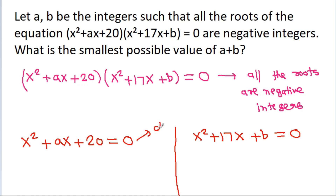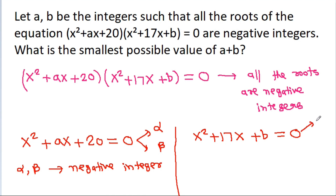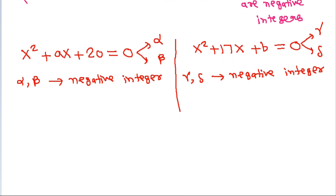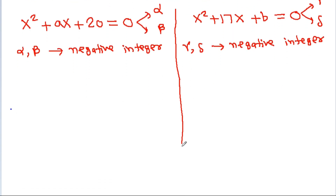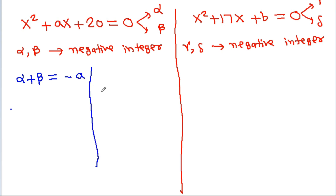Suppose the roots of the first equation are alpha and beta. Then alpha and beta must be negative integers. Suppose the roots of the second equation are gamma and delta. Then gamma and delta must be negative integers. The sum of roots alpha plus beta equals minus a, and the product of roots alpha times beta equals 20.